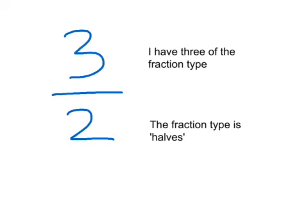Why does this work? Simply because if we look at the denominator, this tells us what type of fraction we're dealing with. In this case, 3 over 2, the fraction type is halves. So I'm dealing with halves. The top part of a fraction, the numerator, tells us how many that we're dealing with. So in this fraction I have 3 halves.